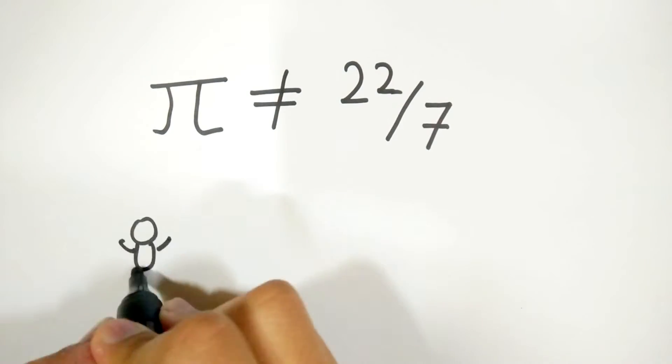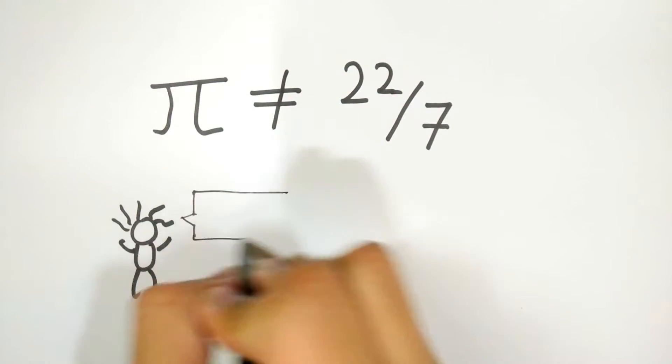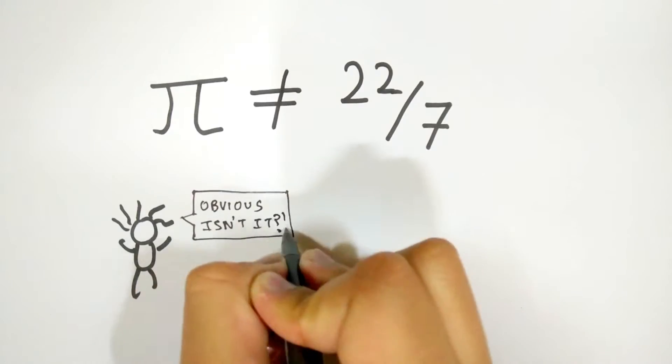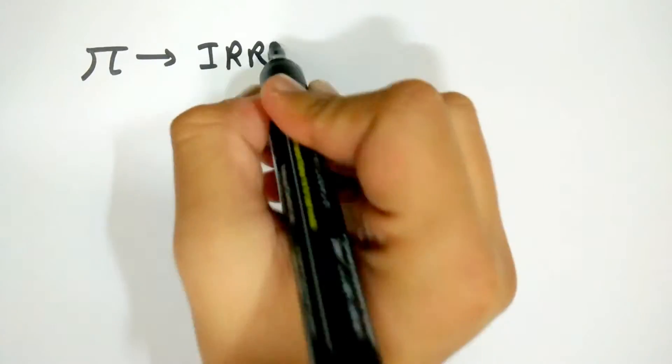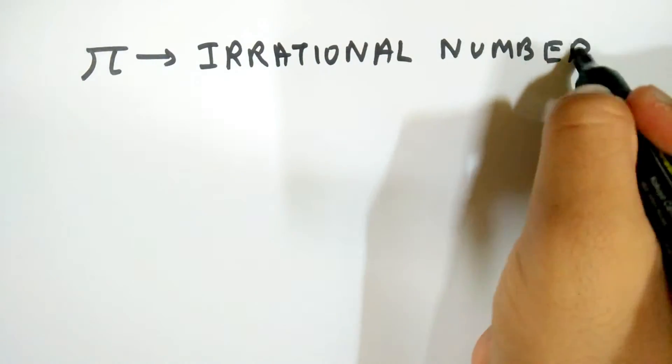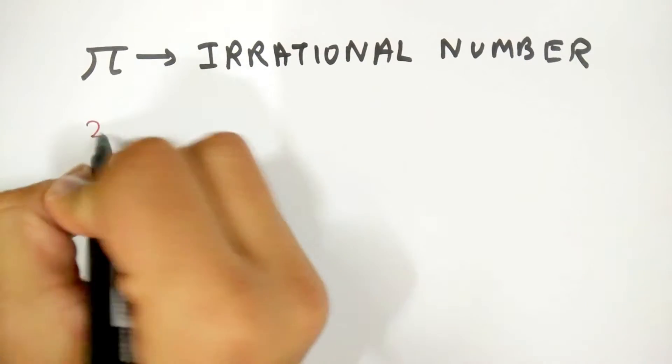Pi, of course, is not equal to 22 upon 7. Well, if you think about it, nothing can be equal to pi, as it is an irrational number. So, it cannot be expressed as a perfect fraction.